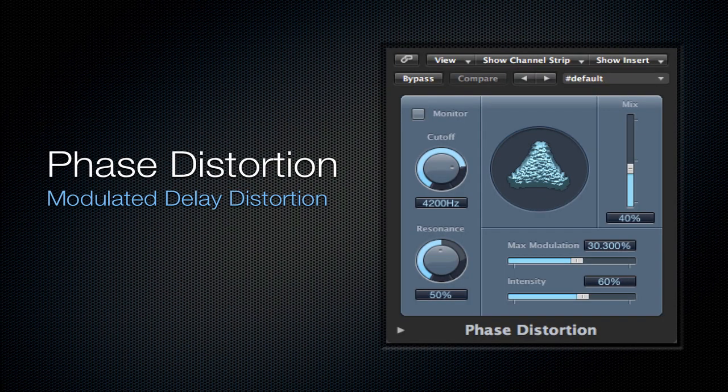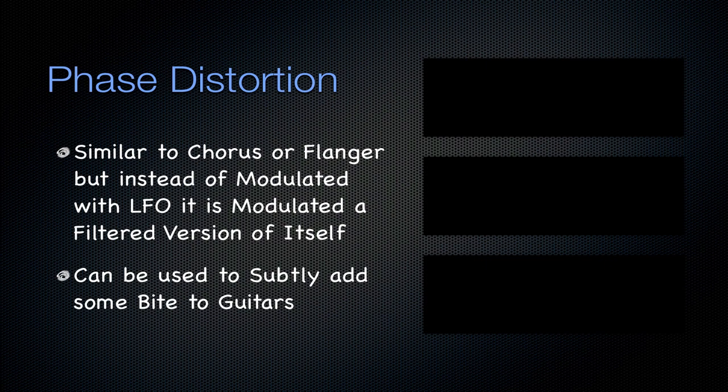Next is going to be the phase distortion. It's a modulated delay distortion, similar to a chorus and flanger, but instead of modulating with an LFO, it's modulated with a filtered version of itself — and this is what creates that phase distortion. It can be used to subtly add some bite to guitars. Phase distortion, overdrive, and the normal distortion plugin are all viable options if you don't use distortion from the amp designer or pedalboard.